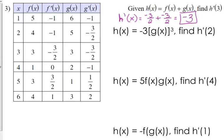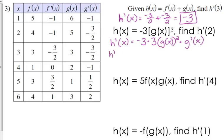If h of x is negative 3 times g of x cubed, h prime of x is equal to — keep the scalar multiple in front, bring down your exponent, keep the inside function the same, subtract 1 from your exponent, multiply by the derivative of what was on the inside — so times g prime of x. So h prime of 2 is equal to negative 9 times g of 2 squared times g prime of 2. g of 2 is 5, g prime of 2 is negative 3 halves. So we've got negative 9 times 25 times negative 3 halves, giving 675 over 2.